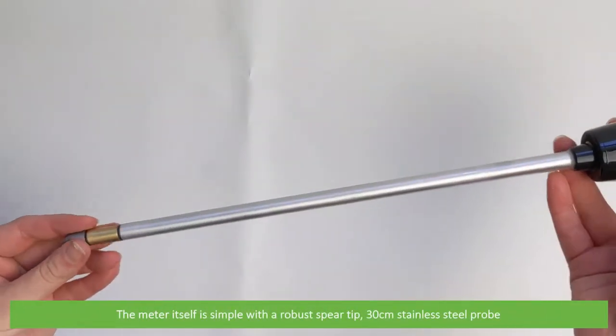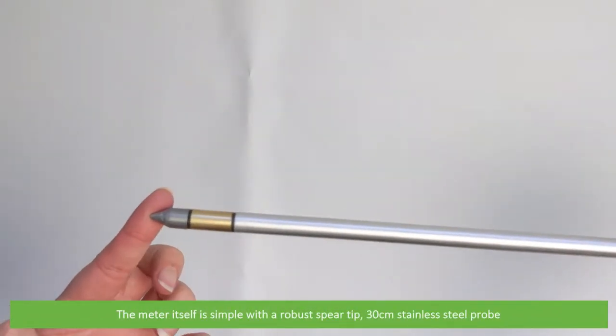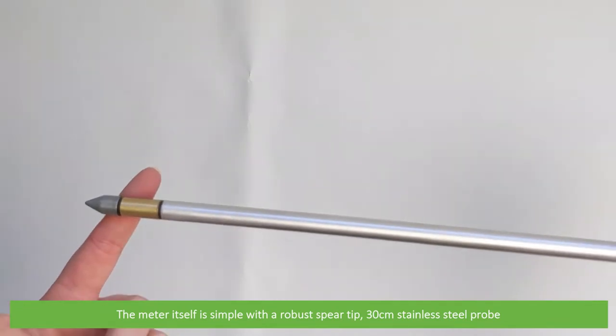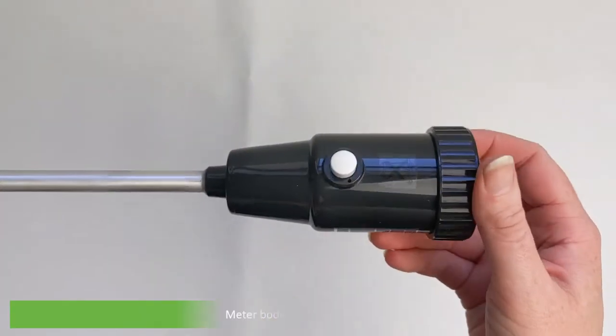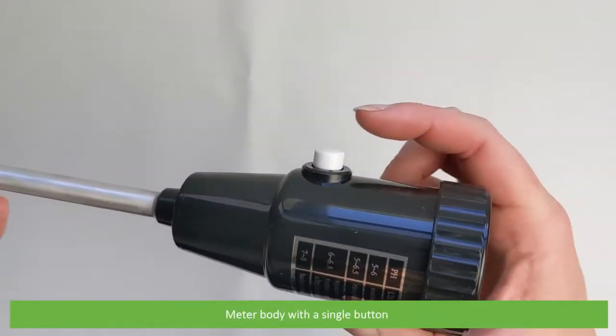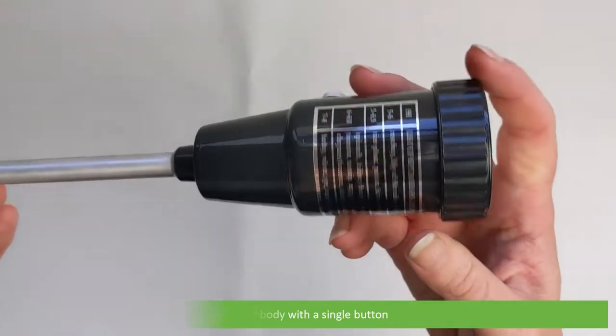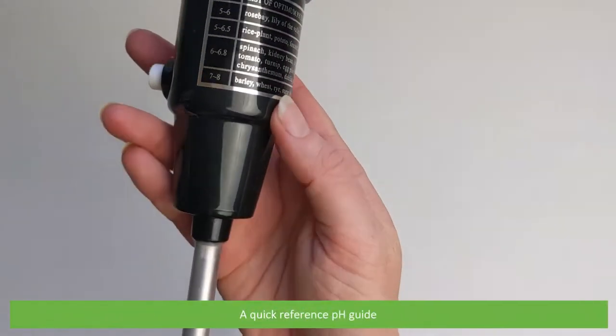The design of the meter itself is simple, with a robust spear tip, 30cm stainless steel probe, the meter body with a single button, and a quick reference pH guide.